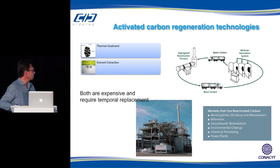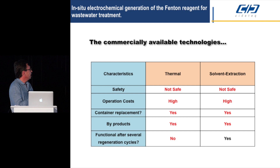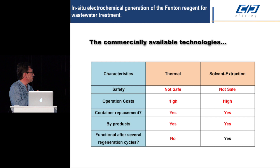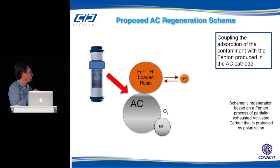There are a couple of regeneration technologies currently used. One is thermal treatment, essentially sublimation of the contaminant. The other is solvent extraction. When there are large amounts of activated carbon, it usually has to be taken to a regeneration plant. Both technologies have high operation costs, require contaminant replacement, produce byproducts, and are not safe.